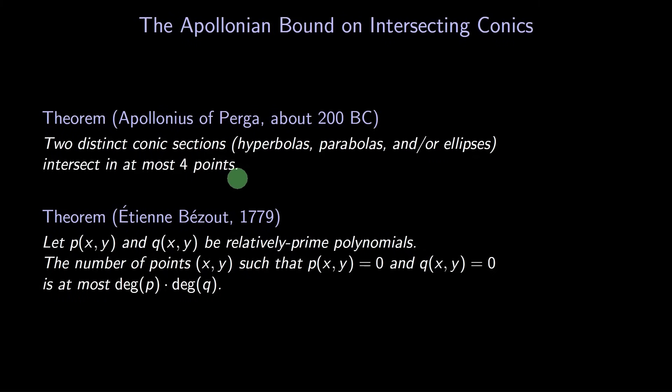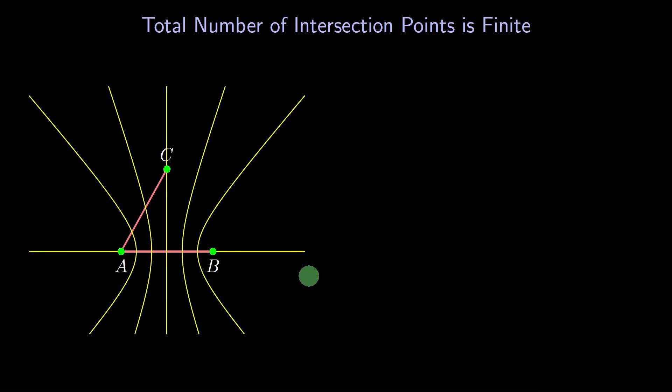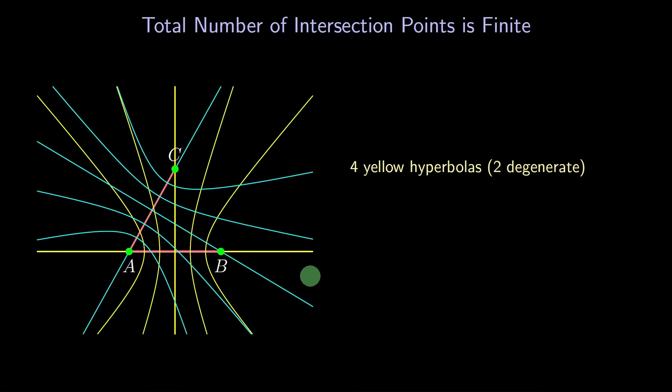Let's go back to our diagram with a bunch of hyperbolas. For side AB, we had these hyperbolas. There are four hyperbolas, two of which are degenerate. For side AC, we had these hyperbolas in blue. Again, four such hyperbolas, two of which are degenerate. How many intersection points do these hyperbolas have? I claim the number of intersection points is at most four times four times four. The first four is the number of yellow hyperbolas, the second four is the number of blue hyperbolas, and the third four is from Apollonius. The product is 64. That means the number of intersection points is finite. So, have we proved the Anning-Erdős theorem?